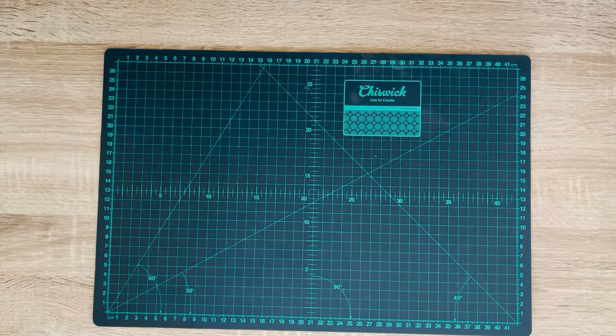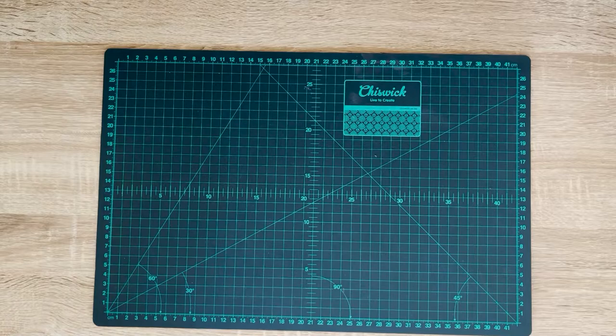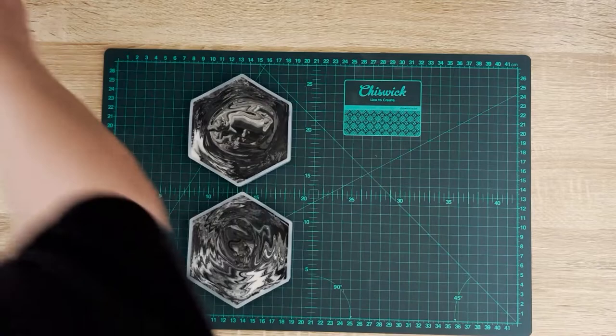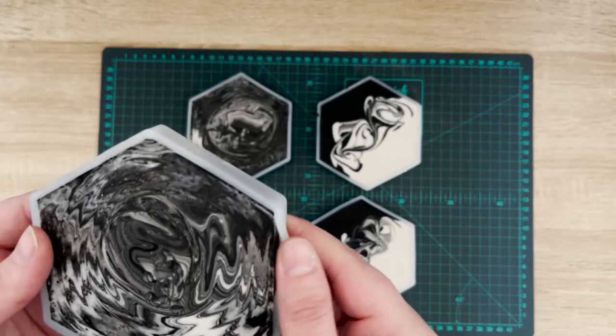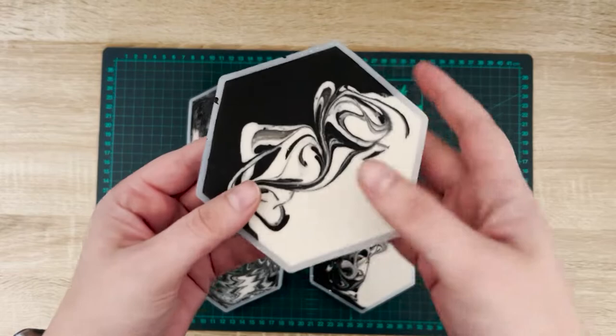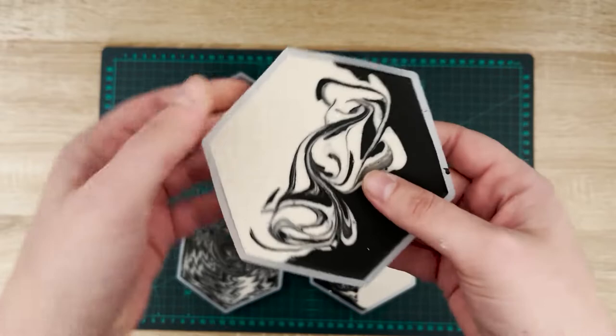So here comes the fun and scary part: the demolding of the coasters. I was a little bit nervous because I never know how it's going to look, but when I started demolding it I got so excited. I'm demolding the two-tone coaster and not all of the silver leaf transferred with the jesmonite, which was fine. I was kind of not expecting that, but it still looked really really pretty. It's kind of like an abstract sort of look and I love abstract stuff.